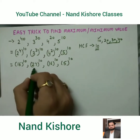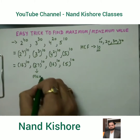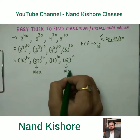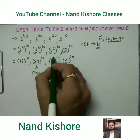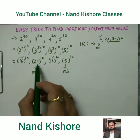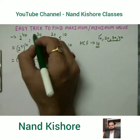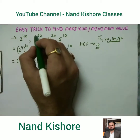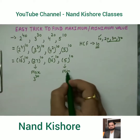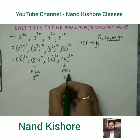Now we compare the bases: 16, 27, 16, and 5. Since all powers are equal (10), the largest base gives the maximum value and the smallest base gives the minimum. So 27^10, which corresponds to 3^30, is the maximum, and 5^10 is the minimum.